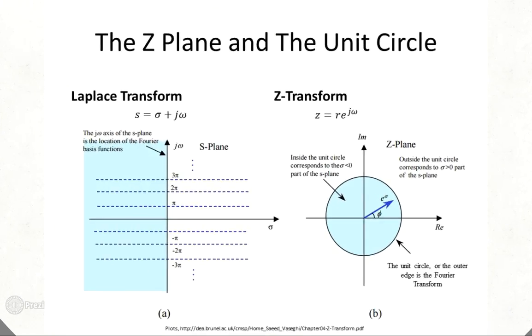Another relationship between the three transforms is the relationship of the S and Z-planes. The S-plane is a complex 2D visualization of the Laplace transform, where the Y-axis is the Fourier transform.